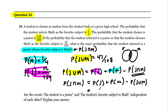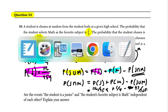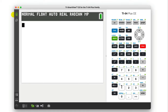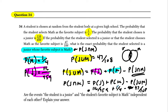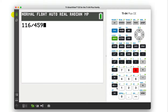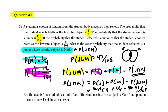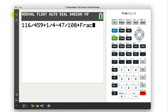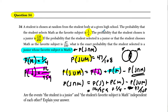All we have to do is take the probability that they are a junior — 116 out of 459 — add the probability that math is their favorite subject, and subtract the union, 47 out of 108. So in the calculator we've got 116 out of 459, plus 1 out of 4, minus 47 out of 108. If I press math and go to fraction, this will give me the reduced fraction as an answer: 31 over 459. And that's the answer.